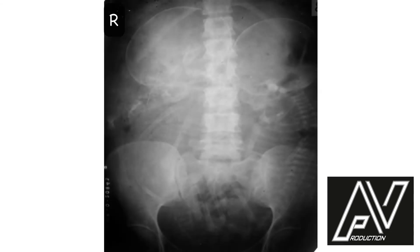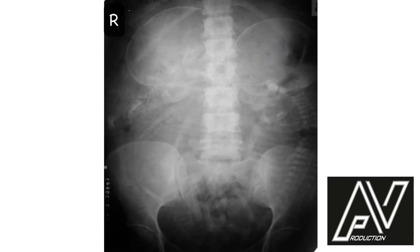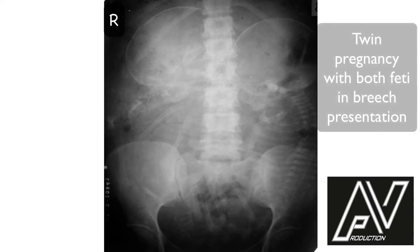This is a plain x-ray of the abdomen and pelvis, AP view, well centralized, well exposed, showing two fetuses. The fetus on the right side is in longitudinal lie, flexed attitude with complete breech presentation, and the fetus on the left side is also in longitudinal lie, flexed attitude, complete breech presentation. Heads of both fetuses are well flexed. There is no discordancy in fetal size. The twins are lying front to back and therefore cannot be conjoined twins. There are no obvious fetal skeletal defects. Therefore, my diagnosis is twins, both in longitudinal lie with breech presentation.